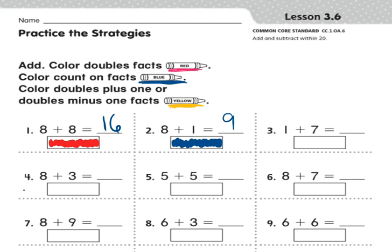Alright, now I'm going to skip to number seven. Alright, that says eight plus nine. And eight plus nine is not a doubles fact. It is not a count on.